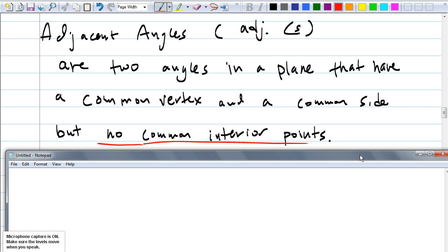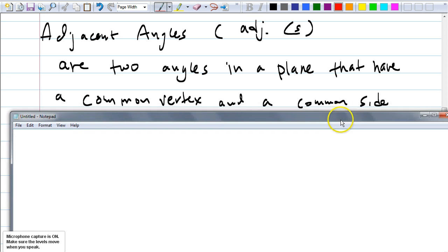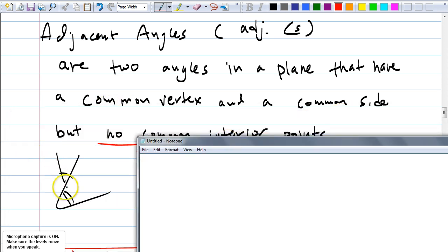Now we understood that we got this part. We know why they have to have a common vertex and a common side. It's because of this case, right? Look at these two angles. Are they adjacent angles? Aren't they right next to each other? Yeah, but they're not adjacent angles because they don't have a common vertex or a common side, right?